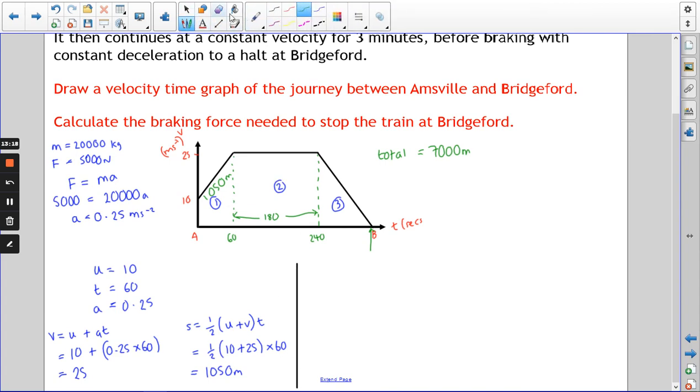Section two now. Section two is constant velocity, so this should be straightforward. We know the velocity is 25 because we just worked it out. We know the time is 3 minutes, so 180 seconds. Distance is speed times time, so s for the middle section: 25 times 180 is 4500 meters.